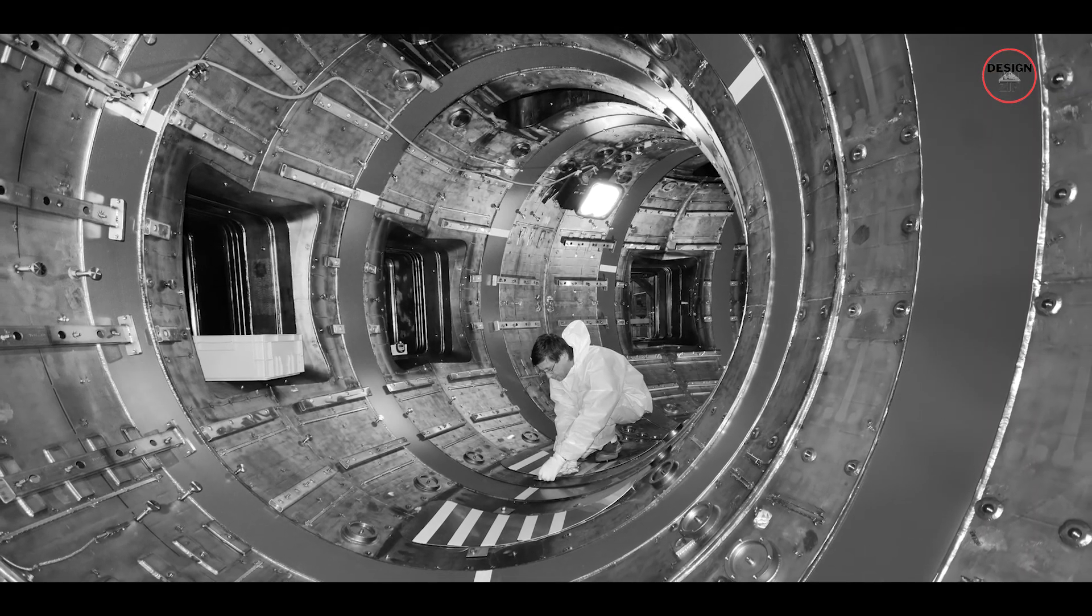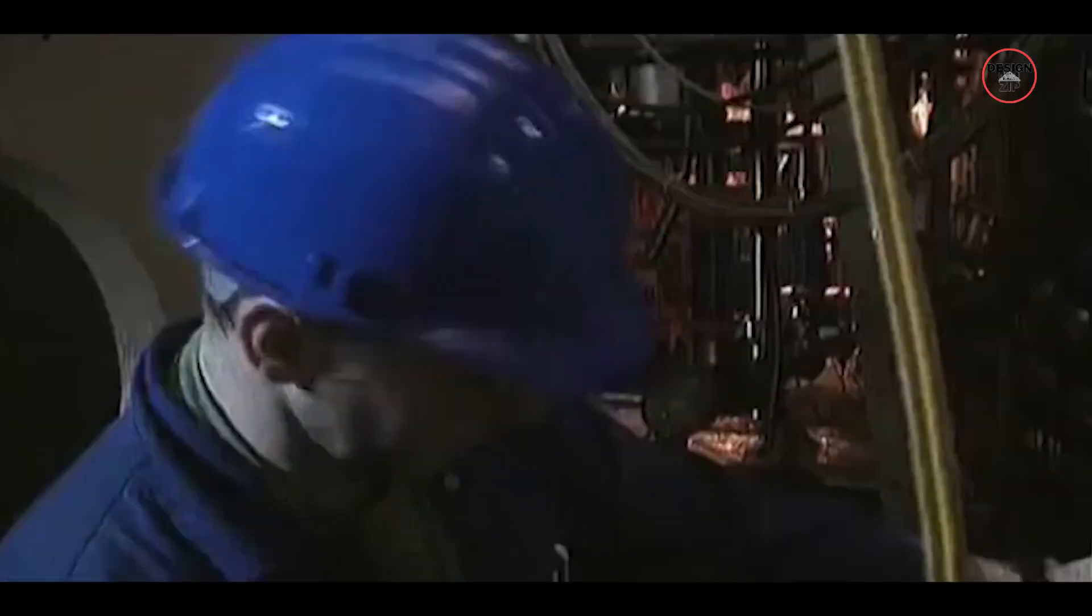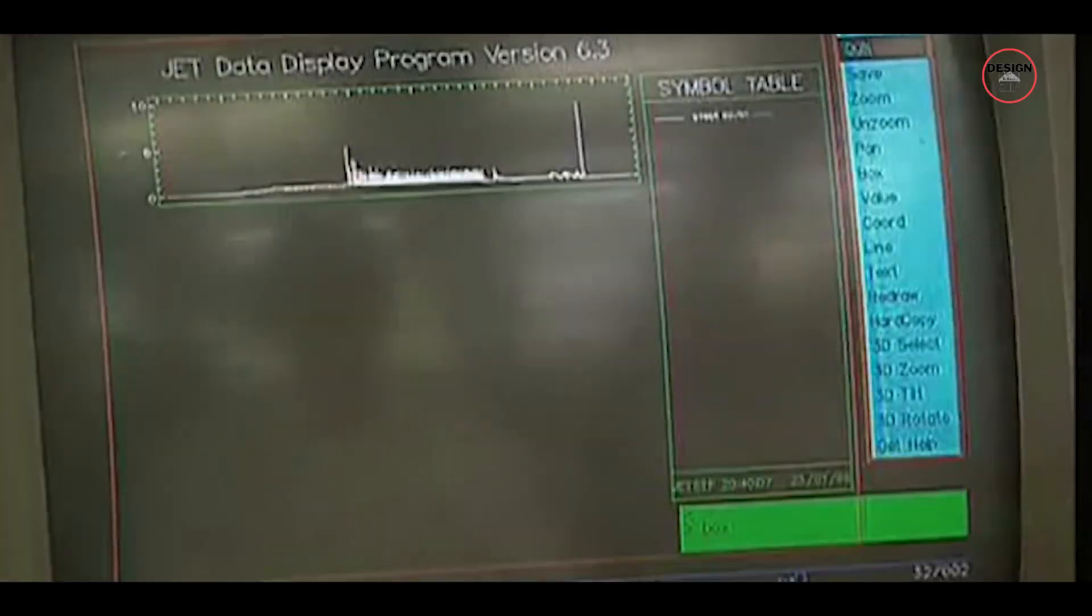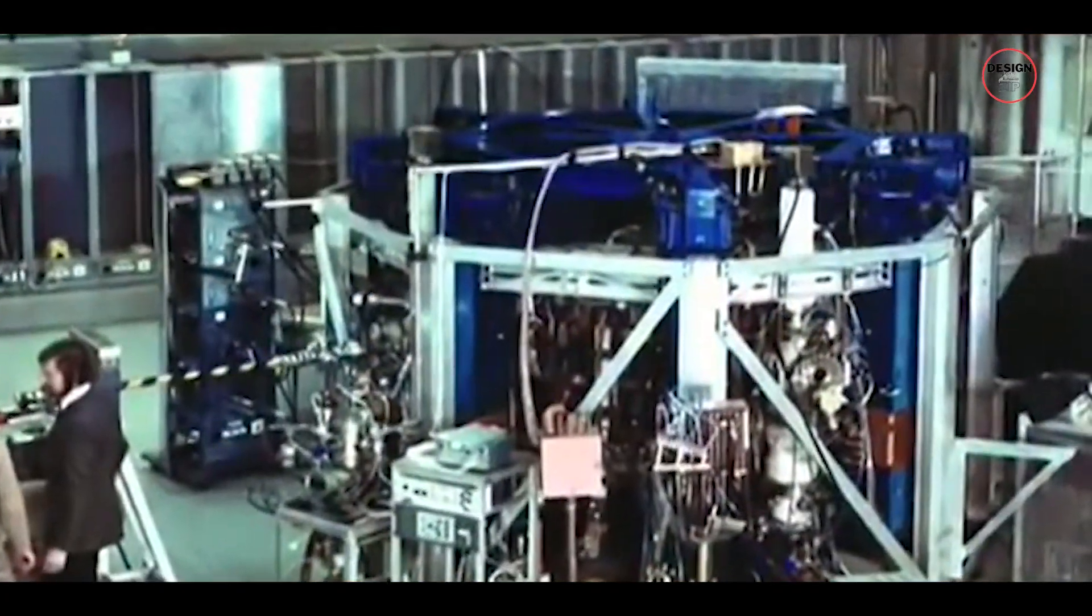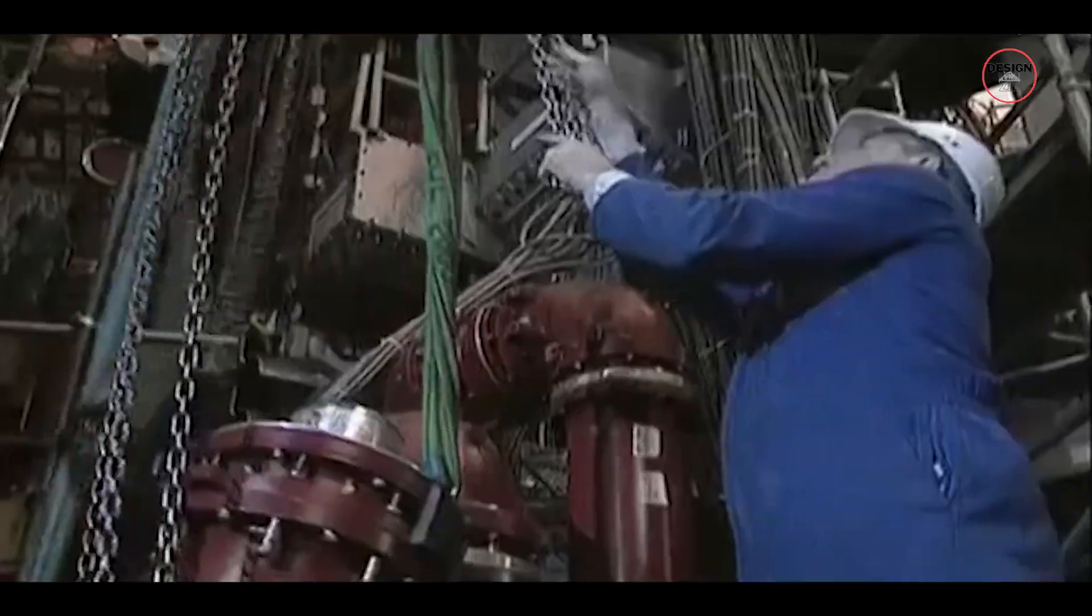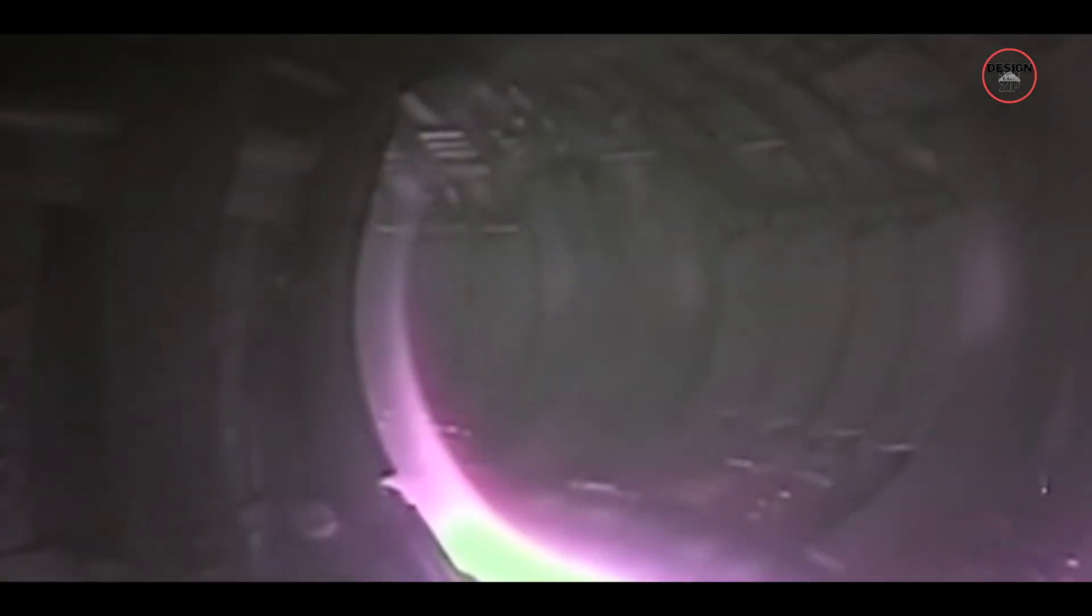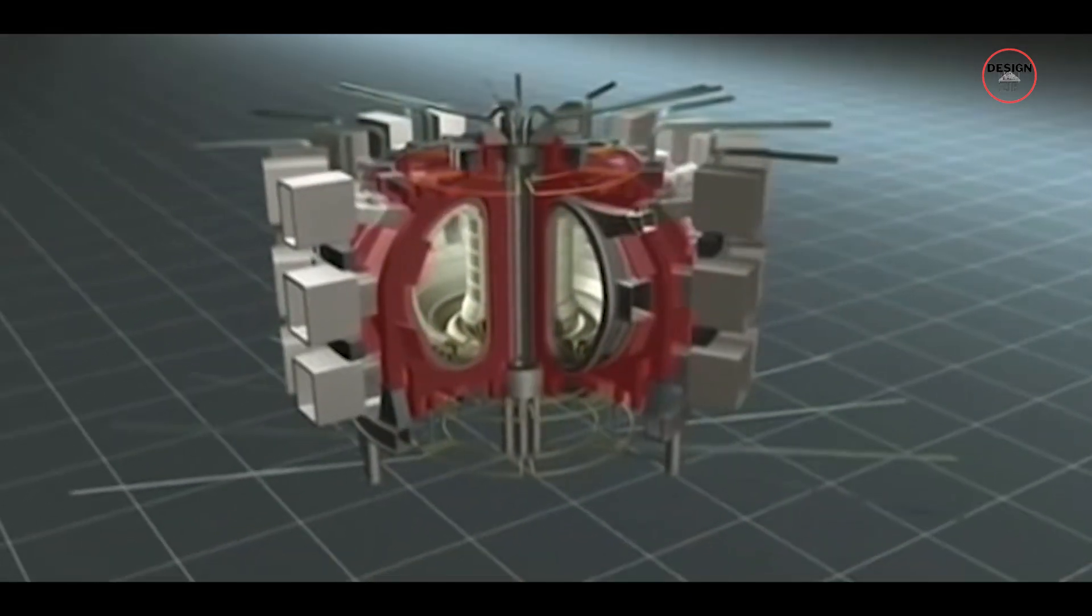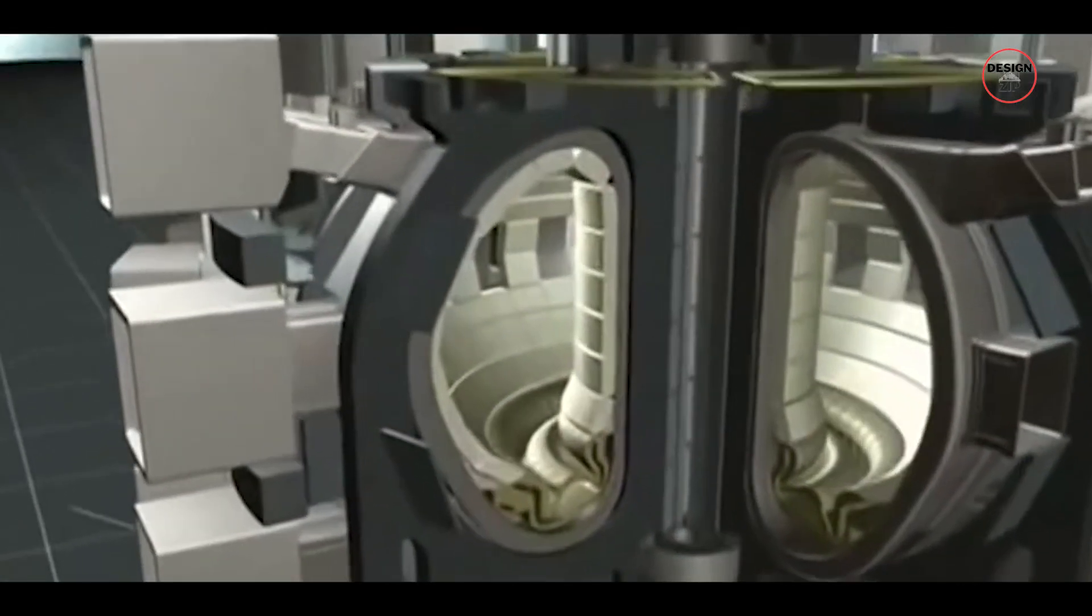The journey of ITER began back in 1978, when the European Commission, Japan, the United States and the USSR came together for the International Tokamak Reactor Workshop. Between 1978 and the mid-1980s, hundreds of fusion scientists and engineers from each participating country took part to assess the Tokamak Confinement System and explore design possibilities for generating nuclear fusion energy. In 1985, the countries decided to build the ITER together, and the project was initiated in 1988.